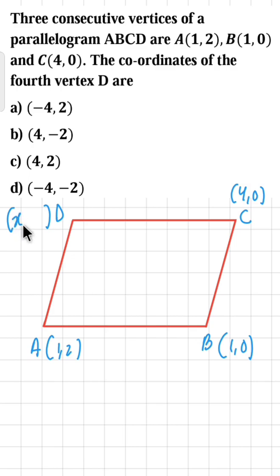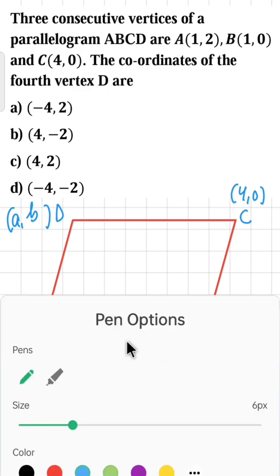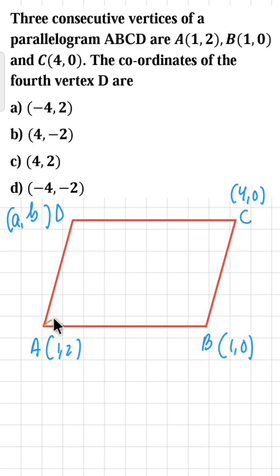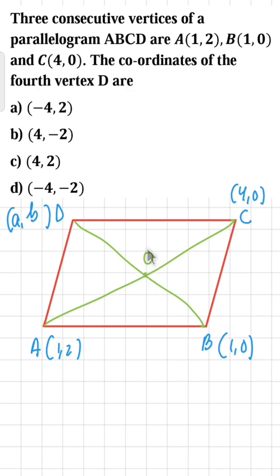Let's assume D has coordinates (a, b). Whenever you have a problem where three vertices of a parallelogram, rhombus, or rectangle are given and you need to find the fourth vertex, we solve it using the diagonals. Draw diagonal AC and diagonal DB — they intersect at point O. Remember the property: in a parallelogram, the diagonals bisect each other — they cut each other into two equal halves.